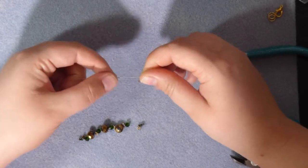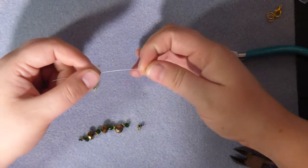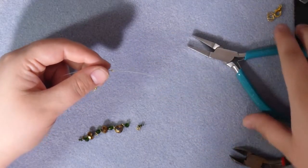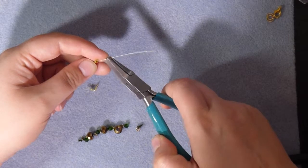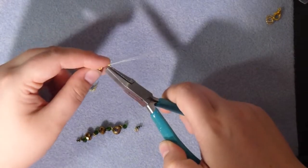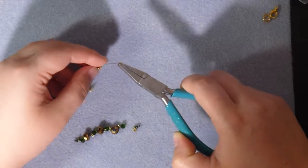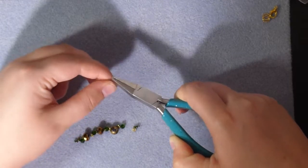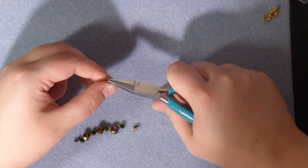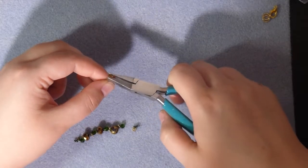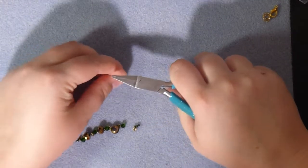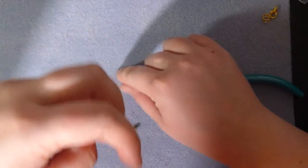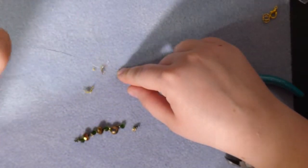So I've put my calotte onto my tiger tail. I'm going to thread my crimp bead on, and then with my pliers, I'm going to just squash that crimp bead in place. Okay, so you should be able to see that's gone nice and flat now, and if I tip it upside down, the calotte stays on the tiger tail.